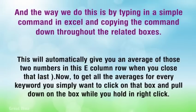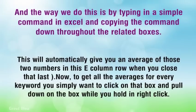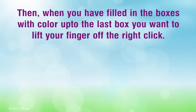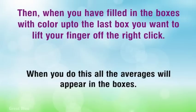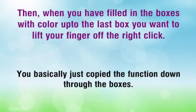To get all the averages for every keyword, you simply want to click on the box and pull down while holding right click. When you have filled in the boxes with color down to the last box, lift your finger off the right click. When you do this, all the averages will appear in the boxes — you have basically just copied the function down through the boxes.